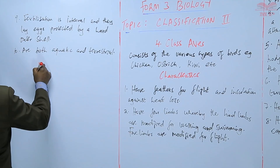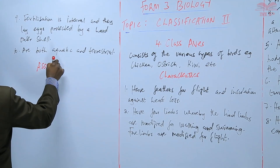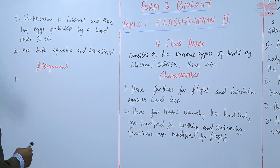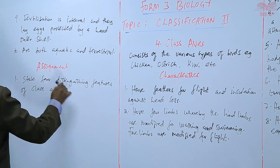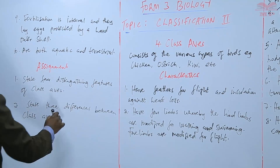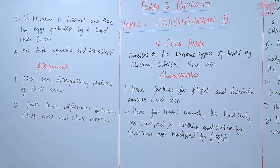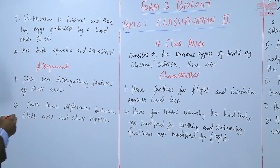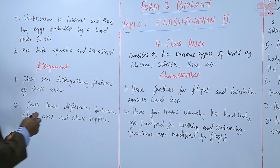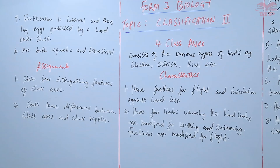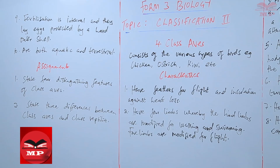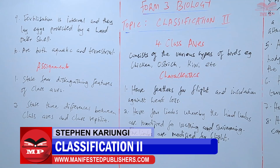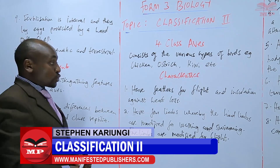As an assignment: state four distinguishing features of class Aves that are used to distinguish class Aves from the other classes, and number two, state three differences between class Aves and class Reptilia that we saw earlier.